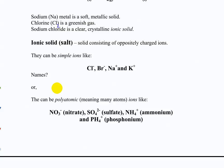Some ions to know: Cl- is chloride, Br- is bromide, Na+ is sodium, K+ is potassium ion. There are also polyatomic ions: nitrate, sulfate, ammonium, and phosphonium, among others.